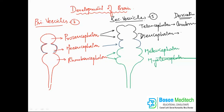The diencephalon develops into all your thalamic structures — the thalamus, hypothalamus, epithalamus, and subthalamus. All the thalamic structures together form your diencephalon, or vice versa, they all develop from the diencephalon.